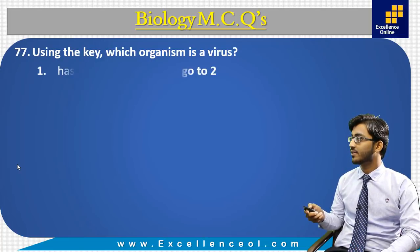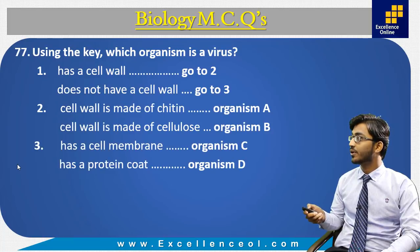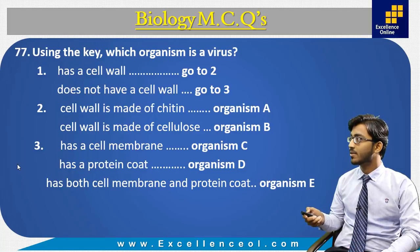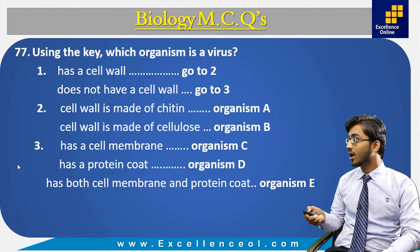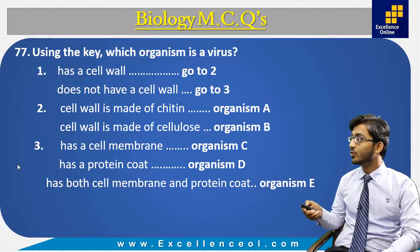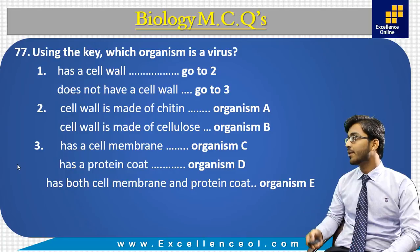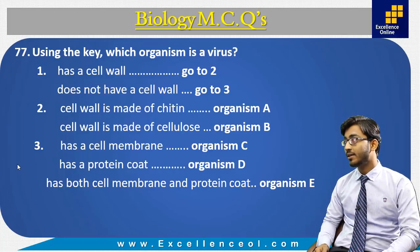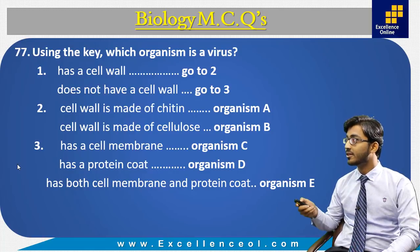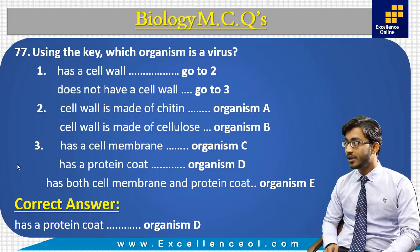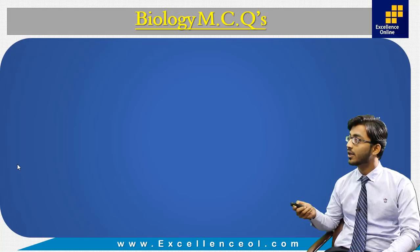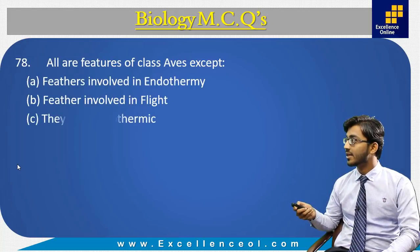Next, MCQ 77: using the key, which organism is a virus? The key states: has a cell wall — go to 2; does not have a cell wall — go to 3. Since the virus has no cell wall, we go to 3. At step 3 the options are: has a cell membrane, has a protein coat, or has both. The virus has no cell membrane; it has only a protein coat called a capsid. This is organism D, which is the virus.